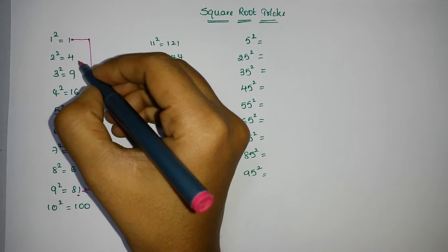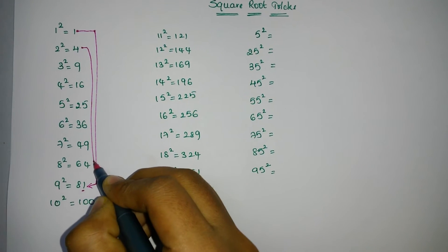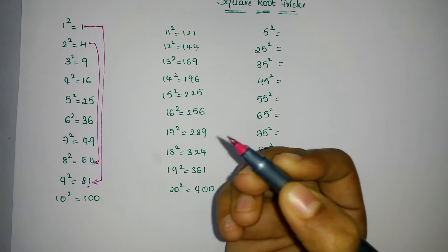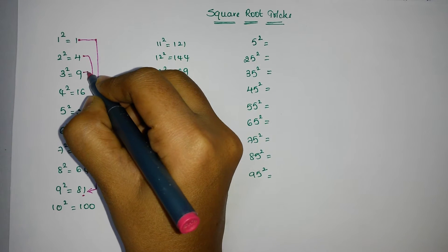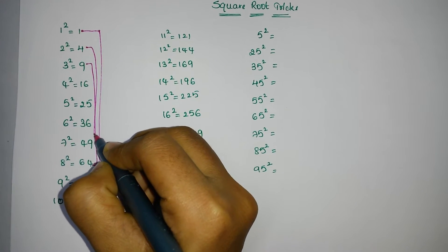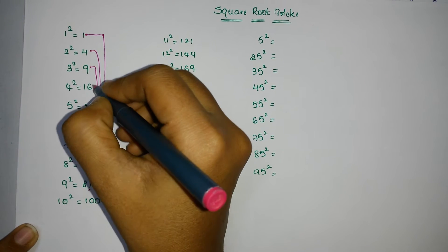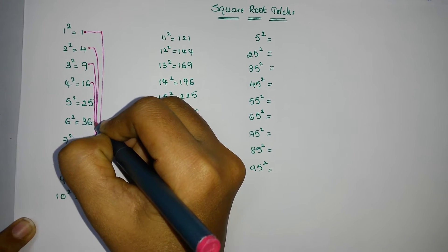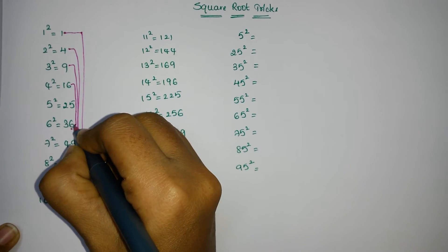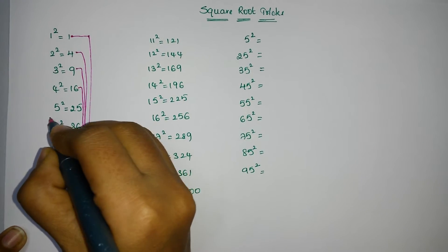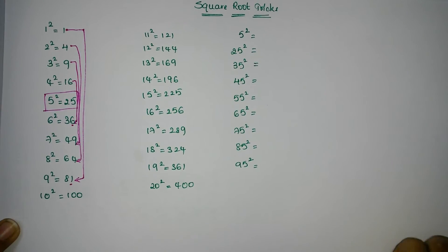In the same way, the squares of 2 and 8 have 4 in the one's place. The squares of 3 and 7 have 9 in the one's place. 4 square and 6 square have 6 in the one's place. The square of 5 has 5 in the one's place.